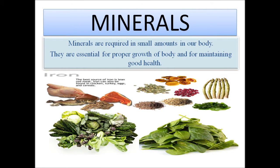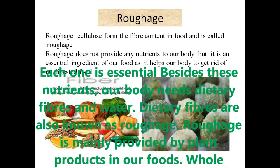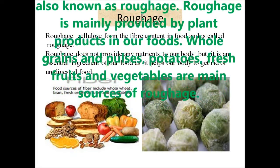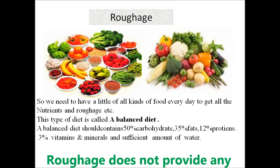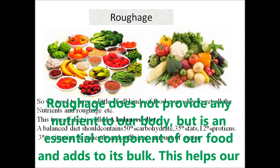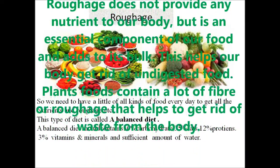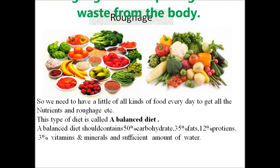Minerals are required in small amounts in our body. They are essential for proper growth and to maintain good health. Besides these nutrients, our body also needs dietary fibers and water. Dietary fibers are also known as roughage, mainly provided by plant-based foods. Whole grains, pulses, potatoes, fresh fruits, and vegetables are main sources of roughage. Roughage does not provide nutrients but adds bulk and helps the body get rid of undigested food.